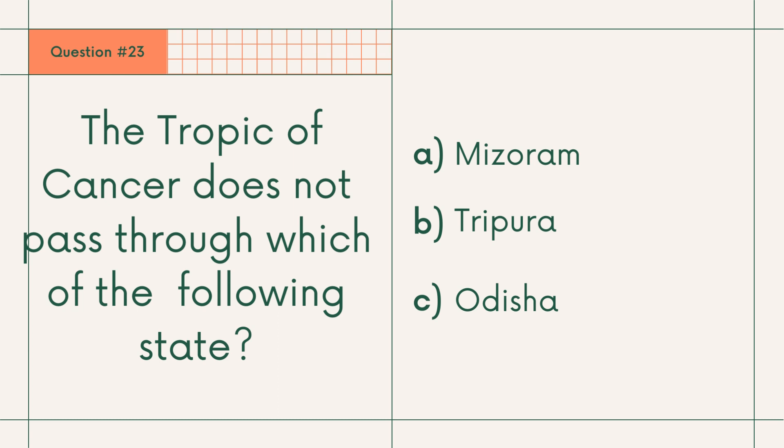Question 23: The Tropic of Cancer does not pass through which of the following states? A. Mizoram, B. Tripura, or C. Odisha. Answer: C. Odisha.